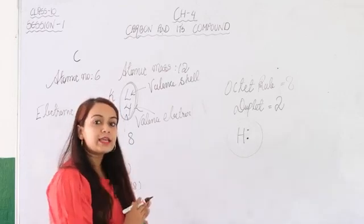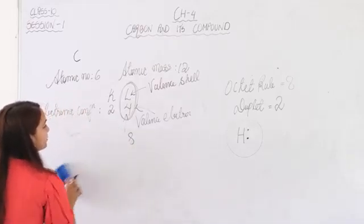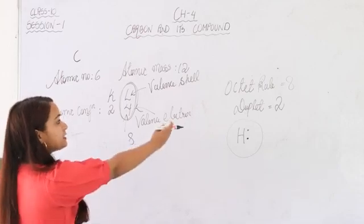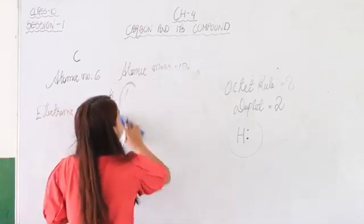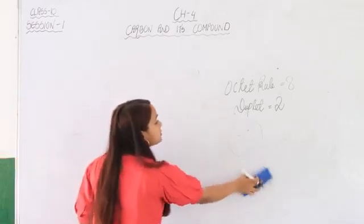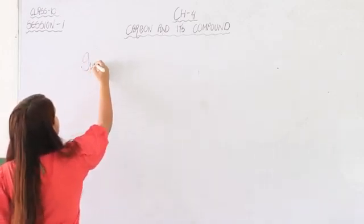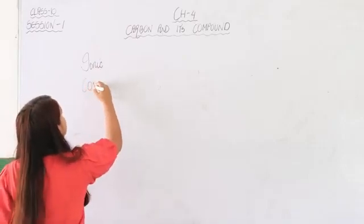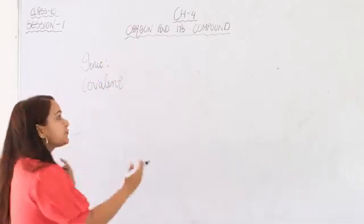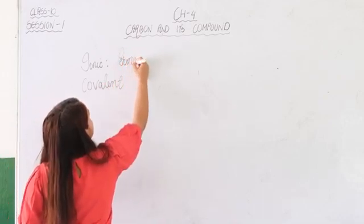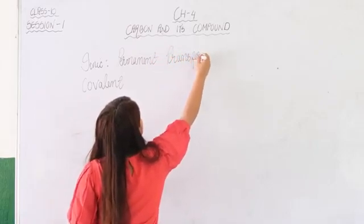Now let us see how carbon can acquire stability. To be stable it needs 8 electrons. The bonds formed by carbon compounds are known as covalent bonds. There are two types of bonds that can be formed: ionic and covalent. Ionic bond is formed by the permanent transfer of electrons.